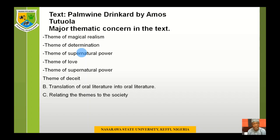Under Pamoyne Dreamcart as the first text to look at, we are going to look at the text as an oral literature translated into written form. We are going to look at magical realism, theme of determination, theme of supernatural power, theme of love, theme of superstitious belief, and theme of deceit.